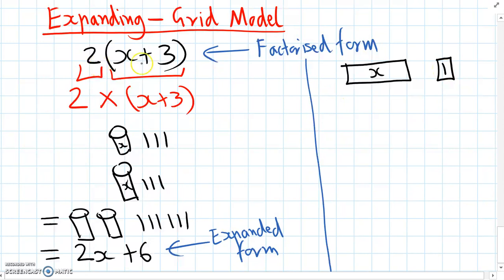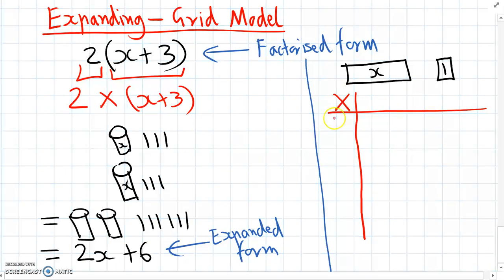To make two x plus three, two lots of x plus three, we need to remember that it's two times x plus three, because these are two factors. The way we're going to show that is with using a grid like this, to show that we're multiplying one side by the other.